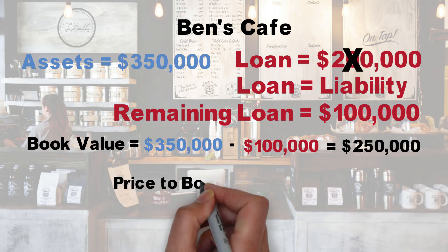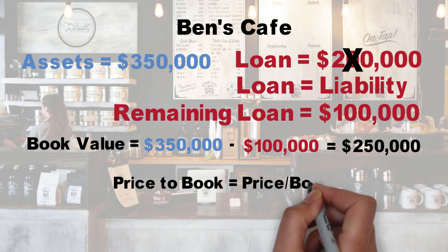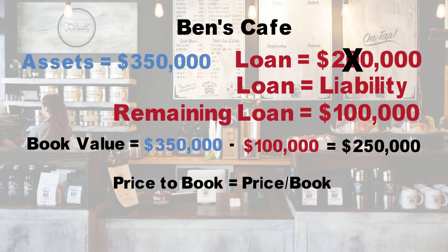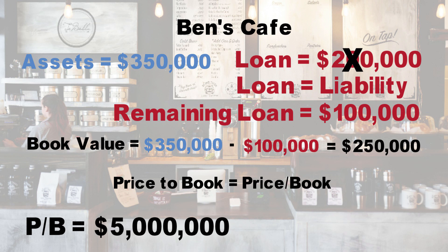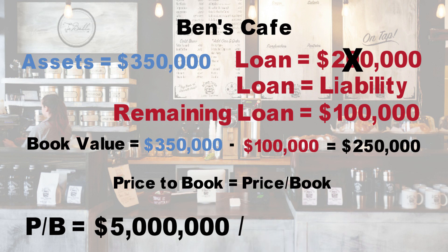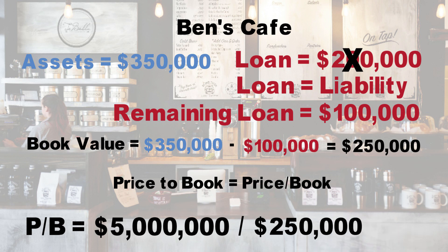Price to book value is the price of his company divided by the book value. As you may recall from our previous episodes, Ben is charging a steep price of $500,000 for 10% of his company, which values his company at $5 million. To calculate price to book, we divide the price, $5 million, by the book value, $250,000. This gives us a price to book of 20.